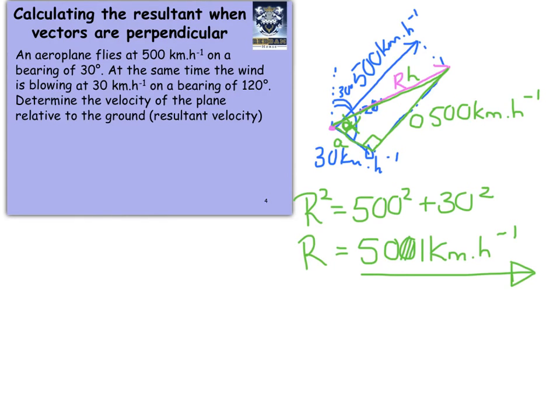Now, I need my angle. I know my opposite and adjacent, so I'm again going to use tan. Tan of alpha is equal to opposite over adjacent, which is 500 over 30. And my angle turns out to be equal to 86.56, or 57 if I round it off, degrees. So, the question asked me, determine the velocity of the plane relative to the ground.